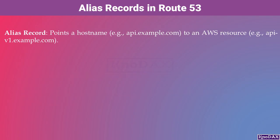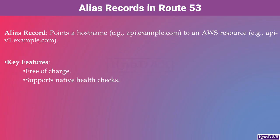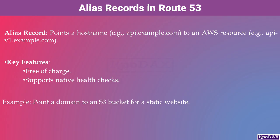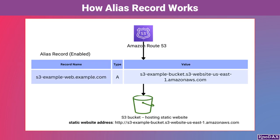Let's discuss ALIAS records in Route 53. An ALIAS record is used to point a hostname, such as api.example.com, to an AWS resource like api-v1.example.com. One of the key benefits is that ALIAS records are free of charge and come with built-in health checks to ensure availability. For example, you can use an ALIAS record to point your domain to an S3 bucket hosting a static website.